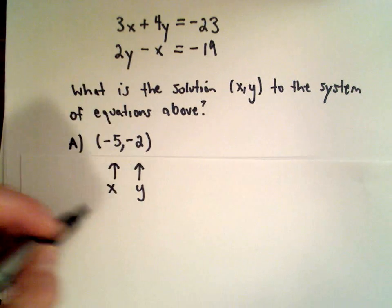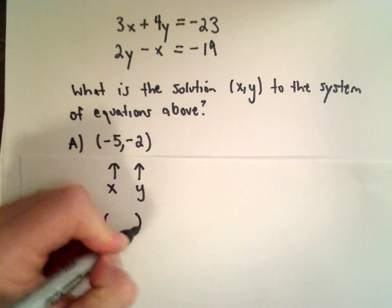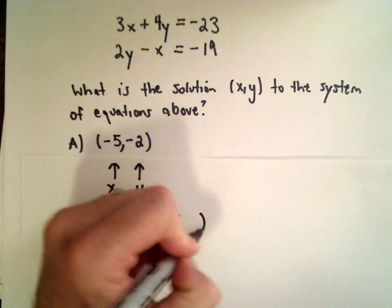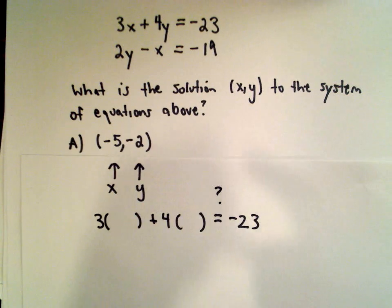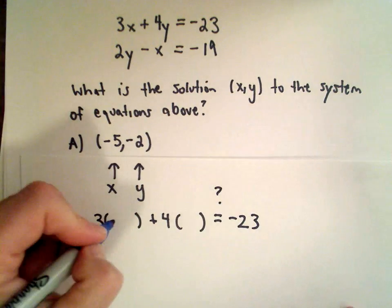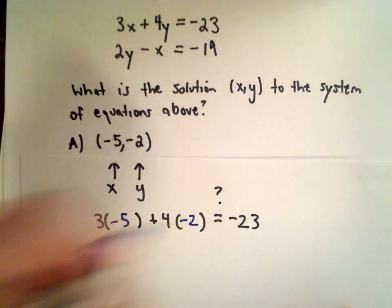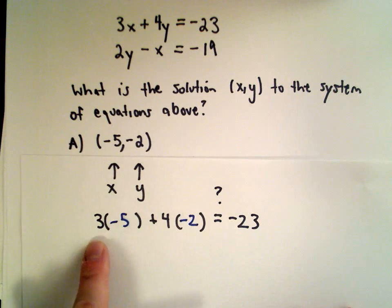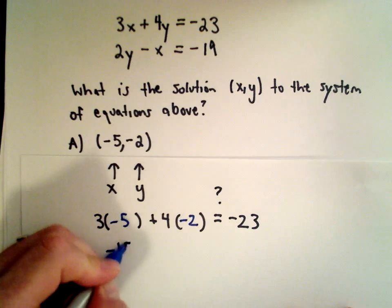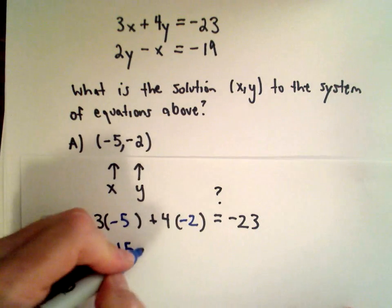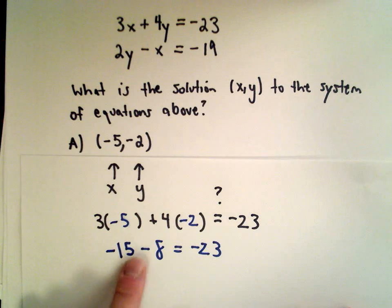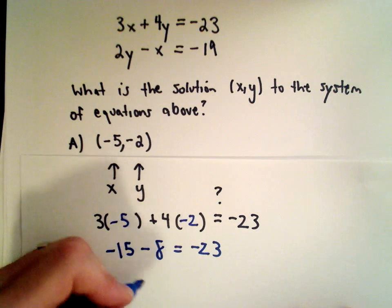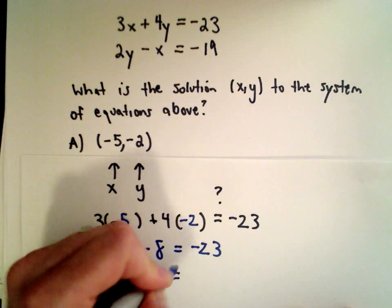I'm going to take the first equation: 3 multiplied by x plus 4 multiplied by y equals negative 23. If I substitute in negative 5 and negative 2, do I get negative 23? Well, 3 times negative 5 is negative 15, and 4 times negative 2 is negative 8. Does negative 15 minus 8 equal negative 23? Yeah, it definitely does.